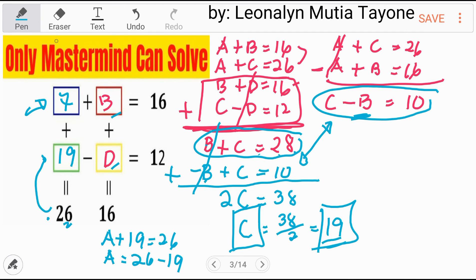Next, 7 plus B equals 16. So, 16 minus 7 and that is 9. So, 9 plus 7 and that is 16. Again, 7 plus B equals 16. To isolate B here, since 7 is adding to B, it subtracts to the other side. 16 minus 7 and that is 9.